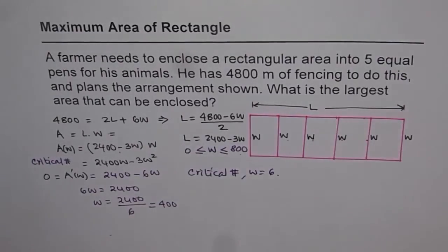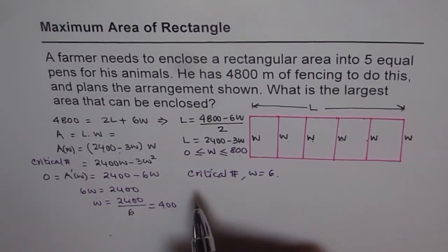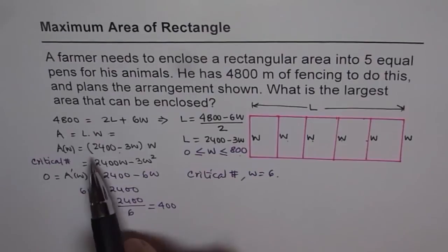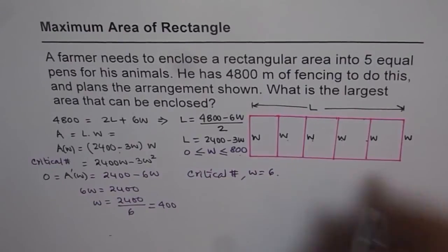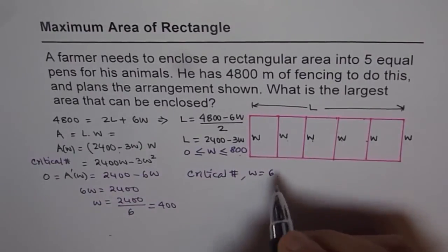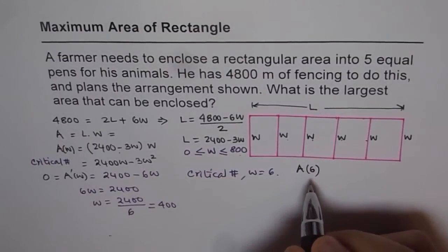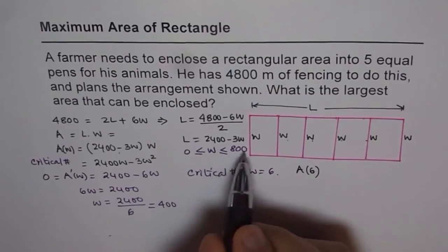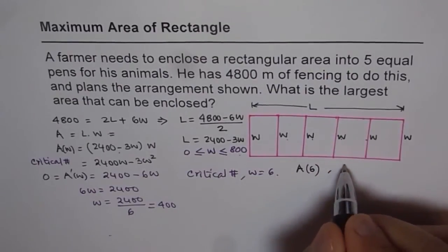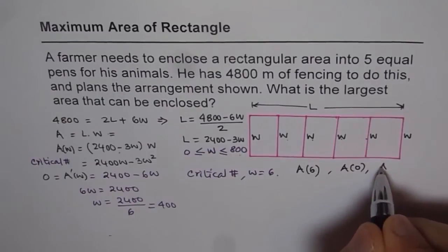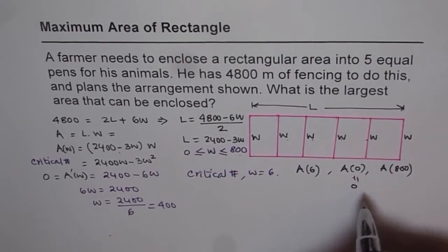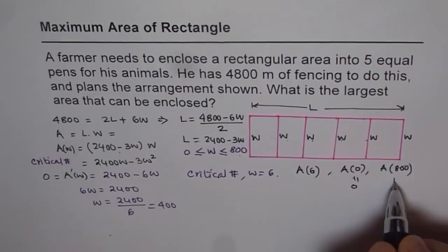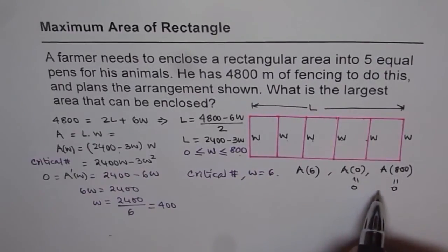To find the absolute maximum we compare the area at the critical number and the two endpoints. When W equals 0, the area is 0. When W equals 800, the area is also 0. So clearly those are not the maximum values.